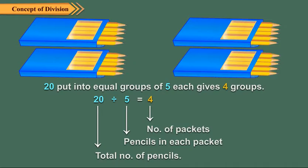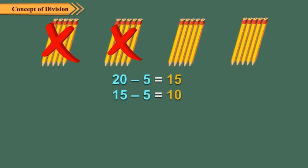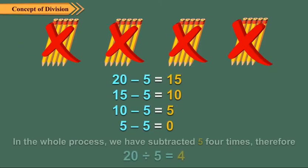Children, equal grouping can also be shown as repeated subtraction. In the above example, we can also divide 20 pencils in five packets by repeated subtraction.